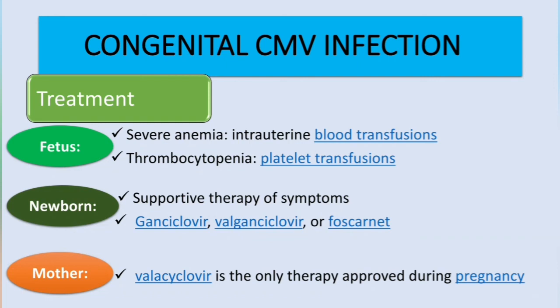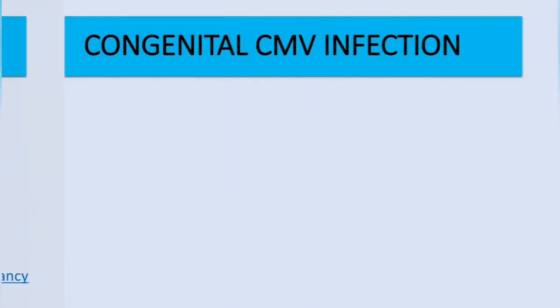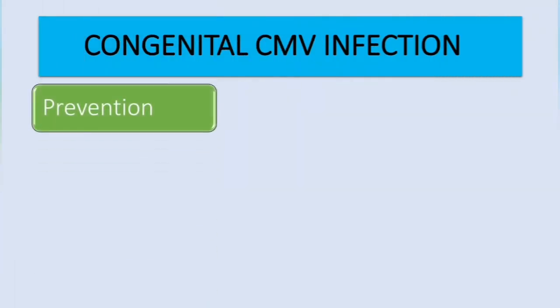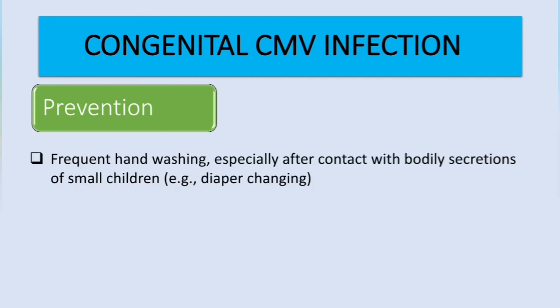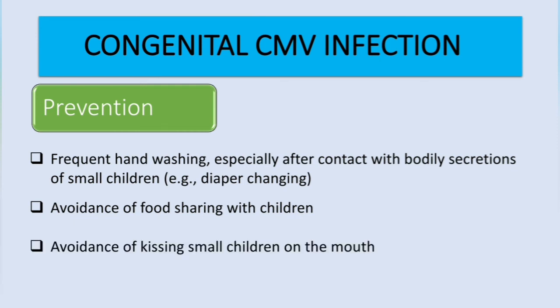For prevention of congenital CMV infection, there should be frequent hand washing, especially after contact with bodily secretions of small children such as during diaper changing. We should also avoid food sharing with children and, most importantly, avoid kissing small children on the mouth.